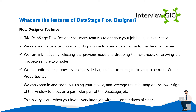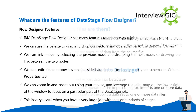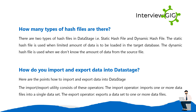How many types of hash files are there? There are two types of hash files in DataStage: static hash file and dynamic hash file. The static hash file is used when a limited amount of data is to be loaded in the target database. The dynamic hash file is used when we don't know the amount of data from the source file.